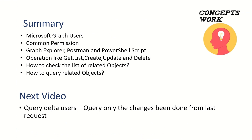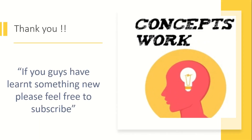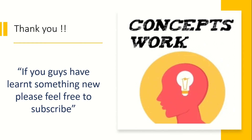Let's quickly talk about the summary of what we've discussed. We covered Microsoft Graph users, common permissions, available operations, and how to check related objects. In the next video, we'll see how to query only the changes related to a particular user object or all users in the tenant. If you've learned something new, please subscribe and check our playlist for member-only content. Thank you so much, bye-bye.